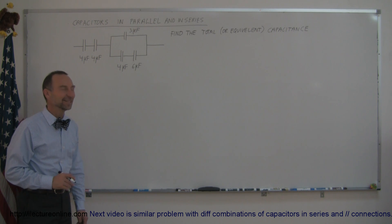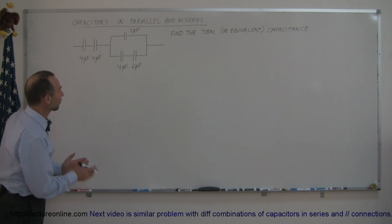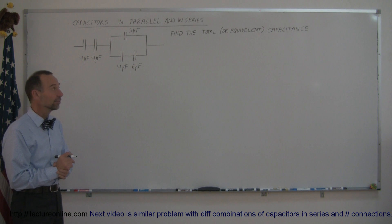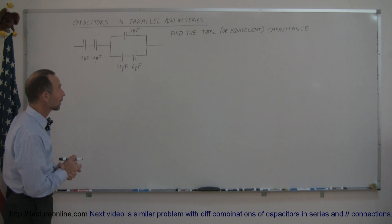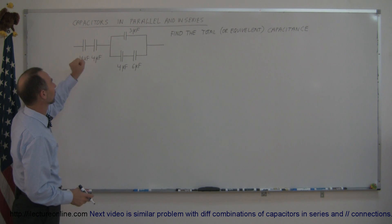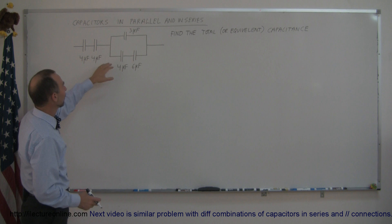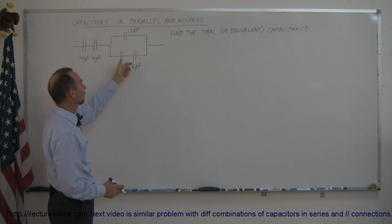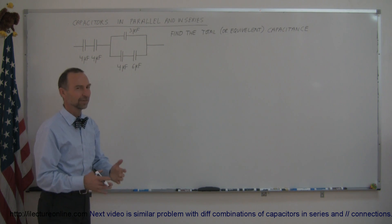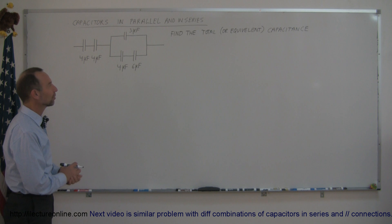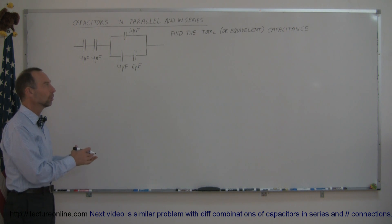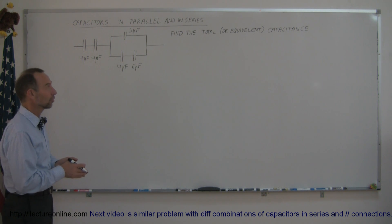Welcome to iLecture Online. Here's another example of how to work with capacitors in parallel and series. This is a combination problem where we have two in series, some in parallel, and in one of the parallel branches there are two in series. It's a complex problem and the question is: how do you find the total or equivalent capacitance?